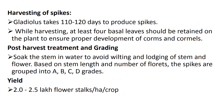Gladiolus takes around 110 to 120 days (approximately 4 months) to produce spikes. While harvesting, at least 4 basal leaves should remain on the plant so that proper development of corms and cormlets occurs; otherwise the plant will die. Do not confuse corm and cormlet: a cormlet is a very small corm that develops at the base of the existing corm, whereas a corm is a short, vertical, swollen underground stem serving as a storage organ to help the plant survive winter, drought, or any adverse condition.